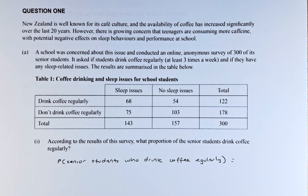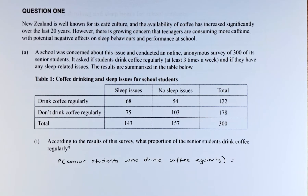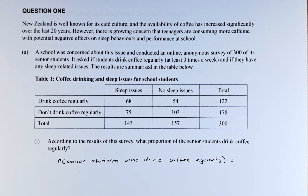New Zealand is well known for its cafe culture and the availability of coffee has increased significantly over the past 20 years. However, there is a growing concern that teenagers are consuming more caffeine with potential negative effects on their sleep behaviours and performance at school. A school was concerned about this issue and conducted an online anonymous survey of 300 of its senior students. It asked if students drink coffee regularly, at least 3 times a week, and if they have any sleep-related issues.